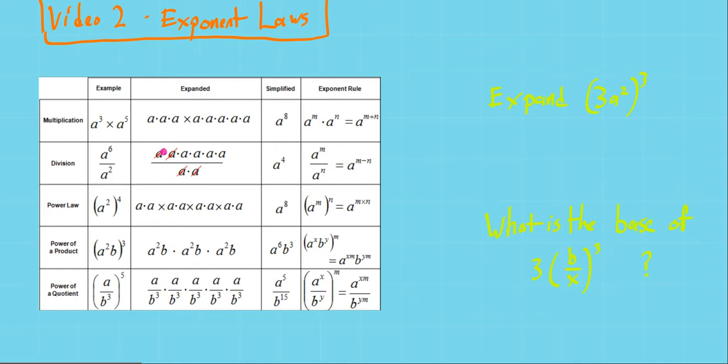Similarly, for division, if a to the sixth is 6 a's on top, a squared is 2 a's on the bottom, cancel out pair and pair, we're left with 4 a's on the top, which is the same as 6 minus 2. So 6 a's minus 2 a's.